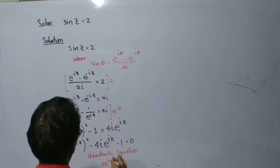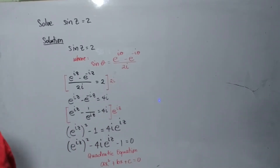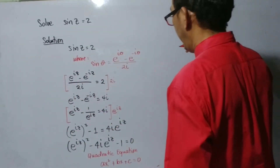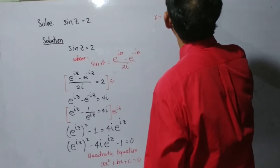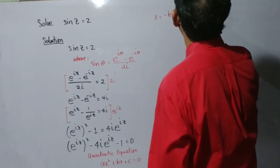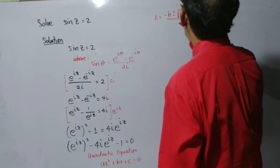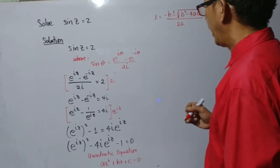Rearranging, minus 1 equals 0, so we are now in the form of a quadratic equation: ax squared plus bx plus c equals 0. Our x here is e to the iz. The formula is x equals negative b plus or minus the square root of b squared minus 4ac, all over 2a.